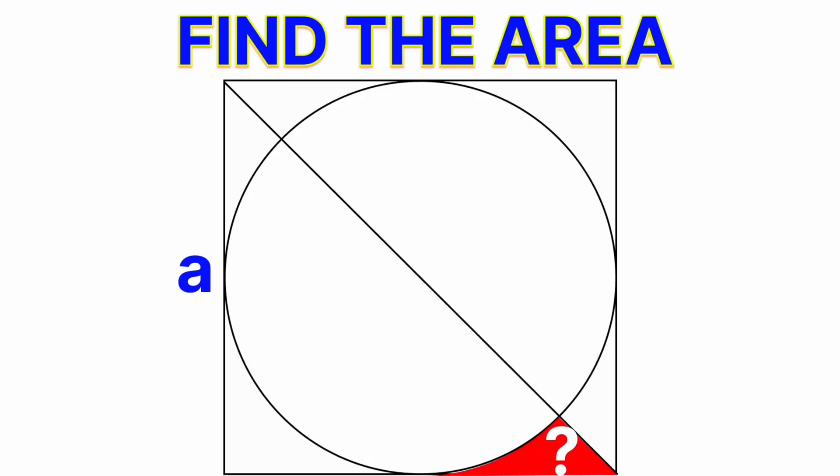At first glance, this shape might look tricky, but it's actually simpler than it seems. We're looking for the area of the shaded region, that little sliver sitting between a triangle and a curved arc.